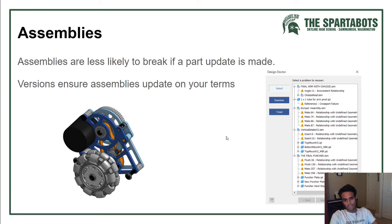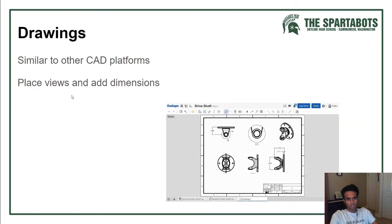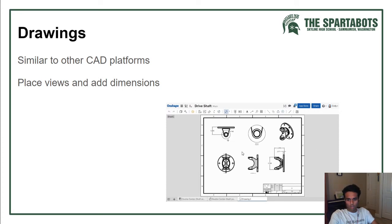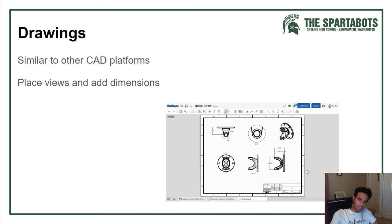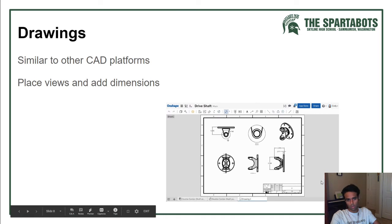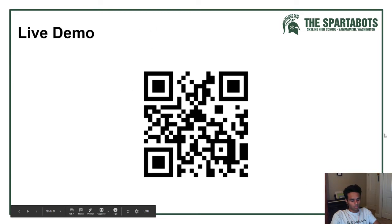Drawings in Onshape are pretty similar to drawings in other CAD platforms — you place your part into it and insert dimensions. What's different is that you can save your own templates for drawings in Onshape, so you can go back to those templates for different parts and keep replicating them.